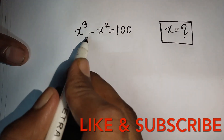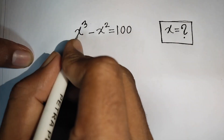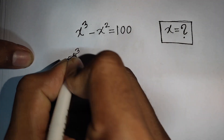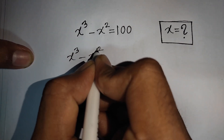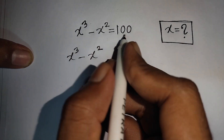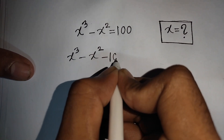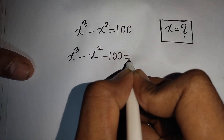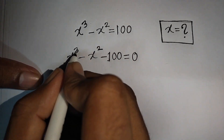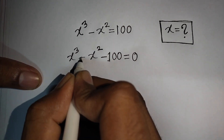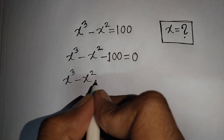How to solve x³ - x² = 100 for x. We have x³ - x², and taking 100 to the left side gives minus 100, equal to 0. So we have x³ - x² - 100 = 0, which can be rewritten as...